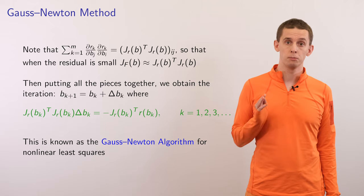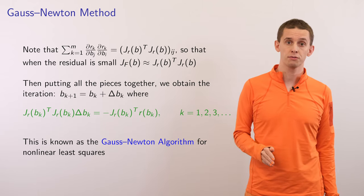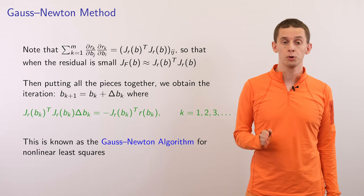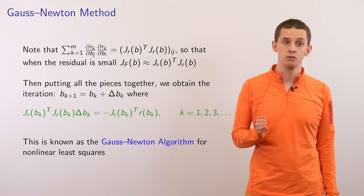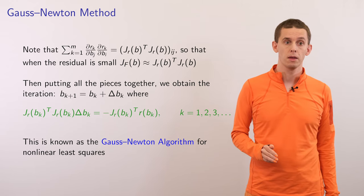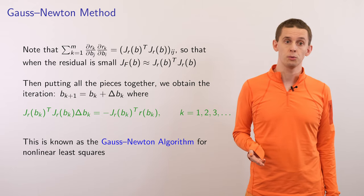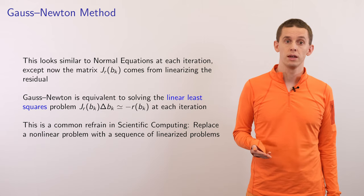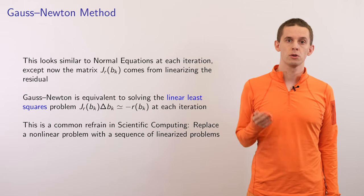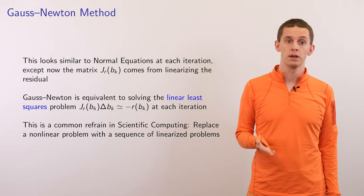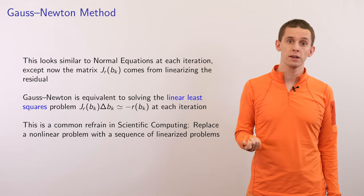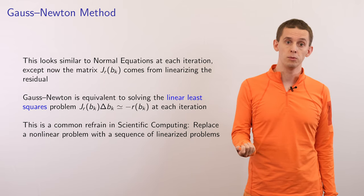Putting all the pieces together, the iteration has the following form. Going from a current guess b_k to a new guess b_{k+1}, we solve J_r(b_k) transpose J_r(b_k) times delta b_k equals minus J_r(b_k) transpose times r(b_k), then set b_{k+1} equals b_k plus delta b_k. This is referred to as the Gauss-Newton algorithm for nonlinear least squares. It is very similar to the normal equations at each iteration, except now J_r of b comes from linearizing the residual. Gauss-Newton is equivalent to solving the linear least squares problem J_r(b) delta b_k equals minus r(b_k) at each iteration — a common theme where nonlinear problems are replaced with a sequence of linear ones.